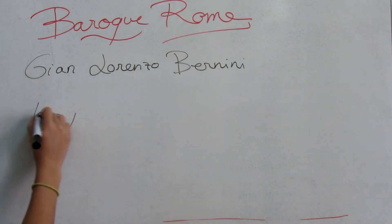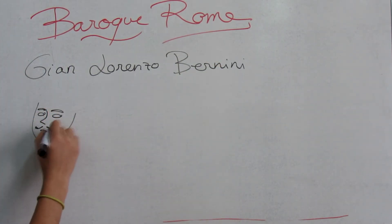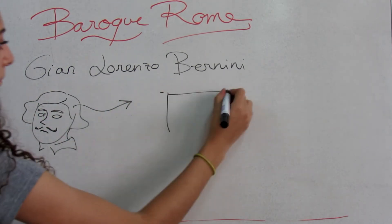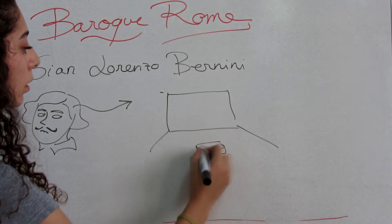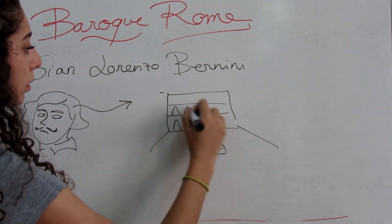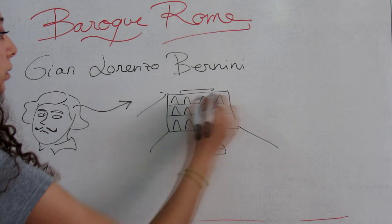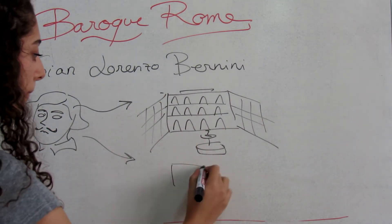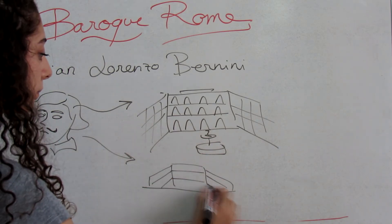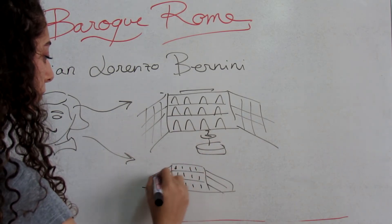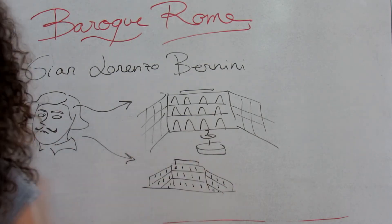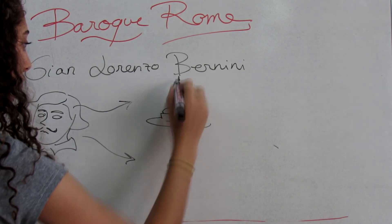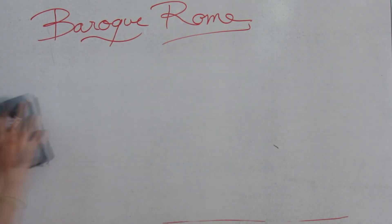Gian Lorenzo Bernini is an Italian artist and prominent architect who worked principally in Rome. He was the leading sculptor of his age, creating the Baroque style of sculpture. In addition, he painted, wrote plays and designed metalworks and stage sets. Bernini had the ability to depict dramatic narratives with characters showing intense psychological states, but also to organize large-scale sculptural works which convey a magnificent greatness. Bernini's architectural works include sacred and secular buildings and sometimes their urban settings and interiors.